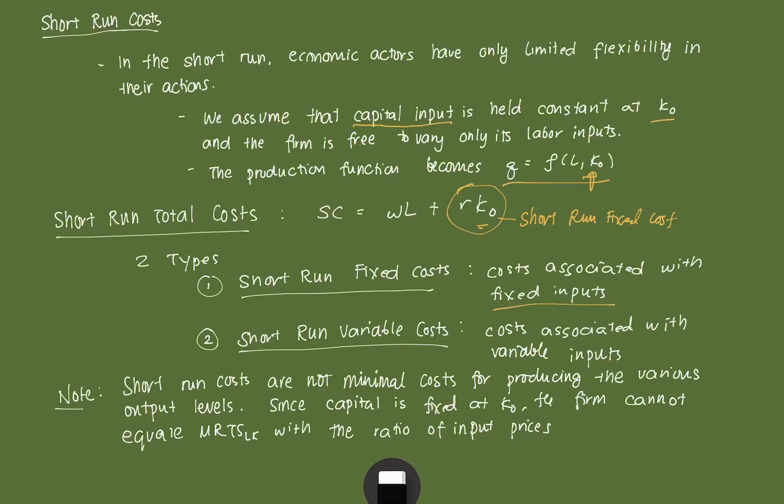You also have—not all inputs are fixed. There are still some inputs that are variable. So you have costs associated with variable inputs. These are here because labor can vary. These are your short-run variable costs.